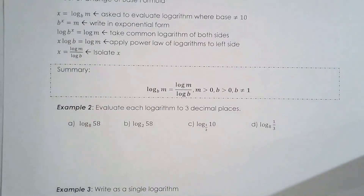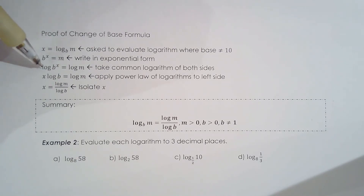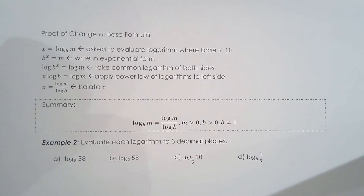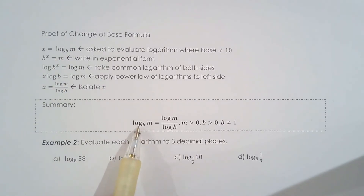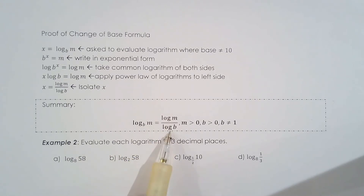Let's learn the change of base formula. We have our logarithm equal to x, then rewrite it in exponential form. Now take the common log — log base 10 — of both sides, and apply the power law of logarithms. So log of b to the x becomes x log b. Isolate for x by dividing both sides by log b. Since x is log base b of m, we get: log base b of m equals log m over log b. We've changed the base to base 10.